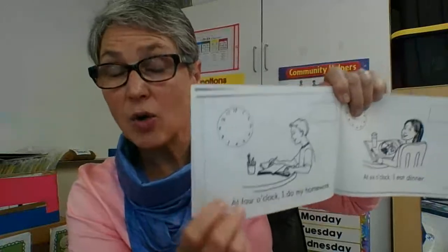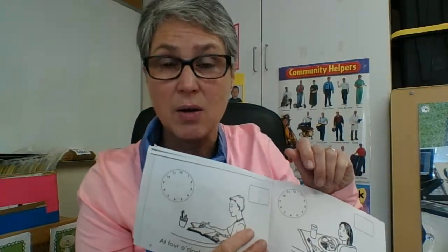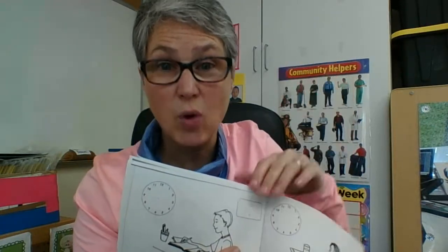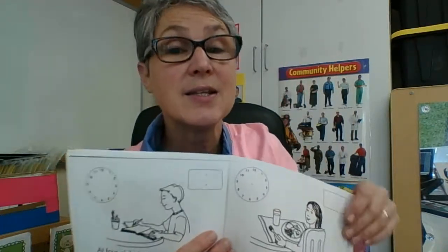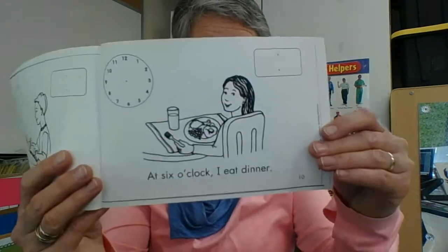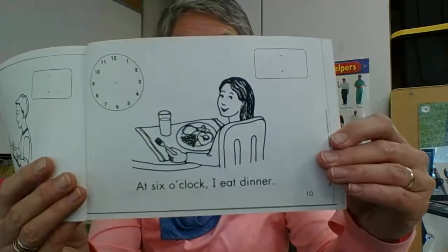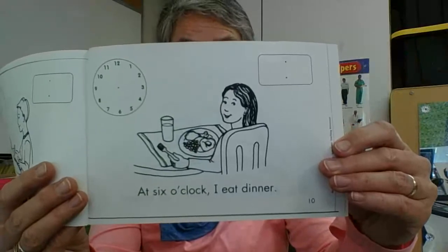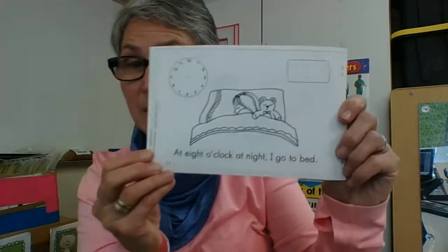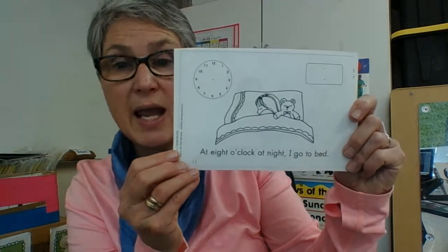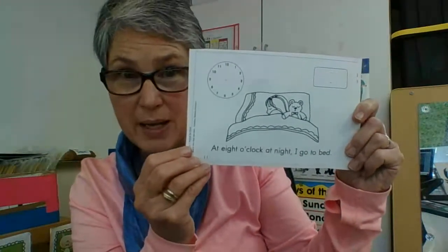Now it's going to try and trick you. We've noticed that it's gone 8, 9, 10, 11, 12, 1, 2, 3, 4 — it skips 5 and goes to 6 o'clock when she gets to eat dinner. And then it skips 7 and goes to 8 o'clock to go to bed.